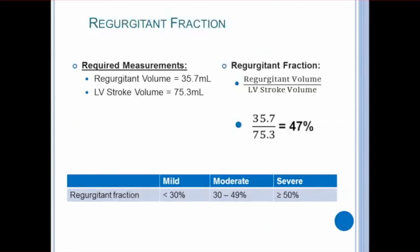Once you've calculated the regurgitant volume, calculating the regurgitant fraction is fairly simple. We only need the regurgitant volume, which we just calculated, and that will be divided by the LV stroke volume. Here we can get a regurgitant fraction of 47%, again consistent with moderate regurgitation.